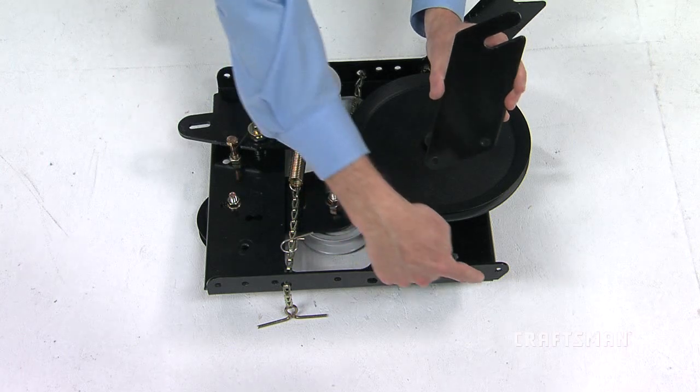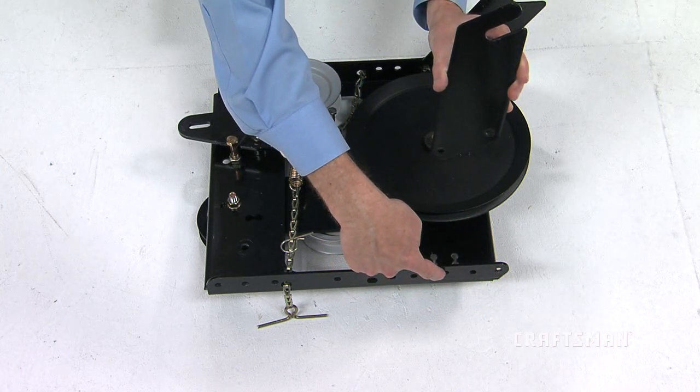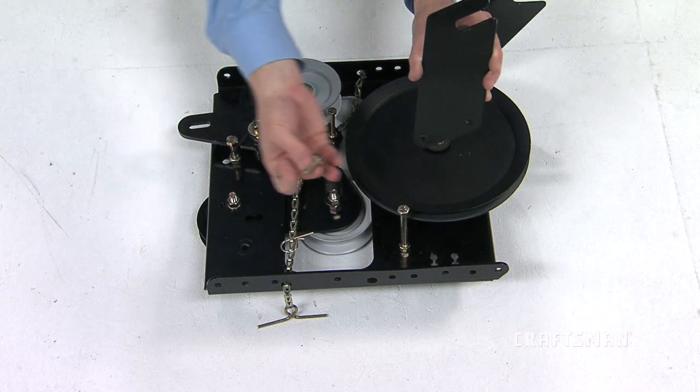Next, attach each rear pulley frame bracket, part 10, to the inside of the clutch idler assembly.